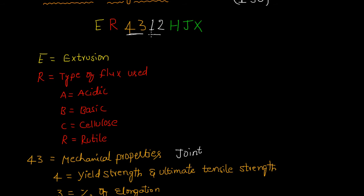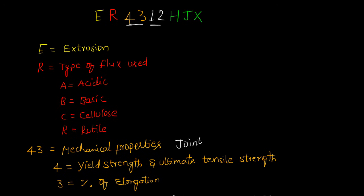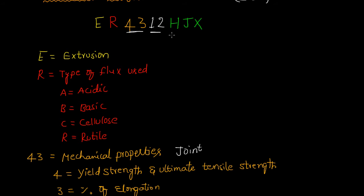The second set of two letters indicates the performance characteristics of coverings. If there is a 1, that indicates the welding position. If there is a 2, that indicates the welding current and voltage settings.